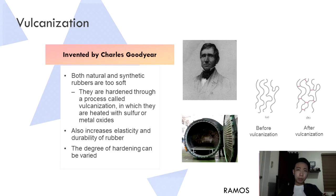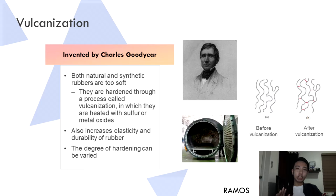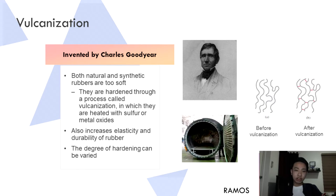The problem with both natural and synthetic rubber is that they are too soft, and thus they are hardened through a process called vulcanization, or curing. In this process, the rubber is heated with a curing agent such as sulfur or other metal oxides, which hardens the rubber. Vulcanization also increases the elasticity and durability of the rubber. The vulcanized rubber develops what are called cross-links between polymer chains. This process was invented by Charles Goodyear, and the Goodyear Tire Company was named after him.